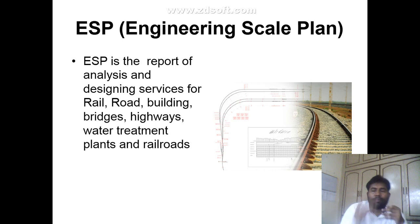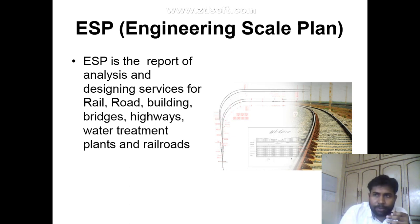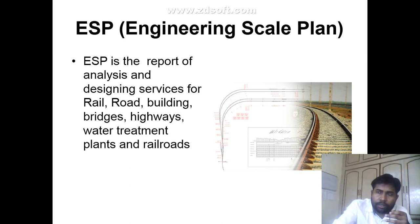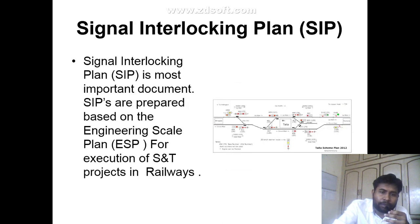In the ESP diagram, everything is indicated — such as track layout, signals, OHE, and items related to railway and metro projects. Next is the Signaling Interlocking Plan — SIP.